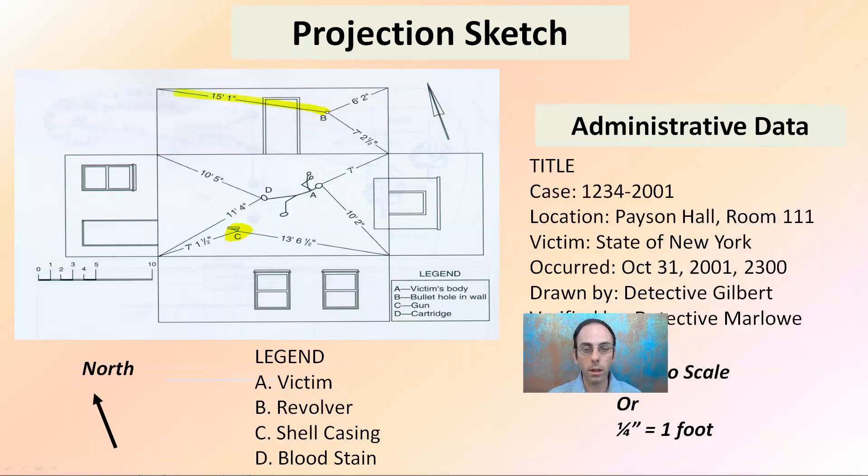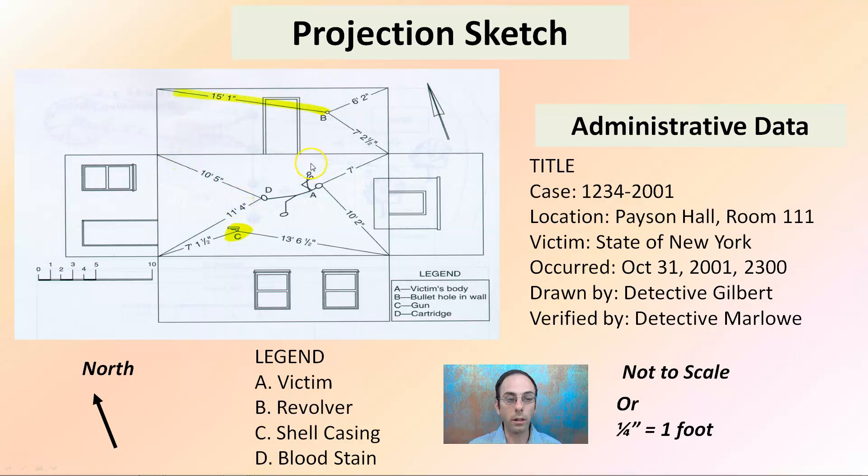And last, we have a projection sketch. So we see all the data that's included, all the details, all the triangulation that's included, the legend of what the letters correlate, and where north is located.